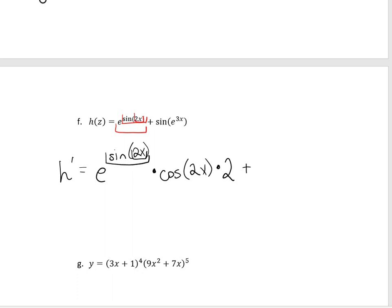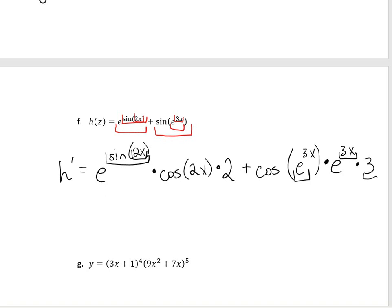Now we're going to do the same thing on this next one. Our outermost function is sine of e to the 3x. The derivative of sine is cosine — leave the inside alone. Then multiply by the derivative of the inside: e to the anything is e to the anything, leave that alone, times the derivative of 3x, which is 3. So we're Russian dolling it — taking each piece, popping it out, taking the next piece, popping it out.